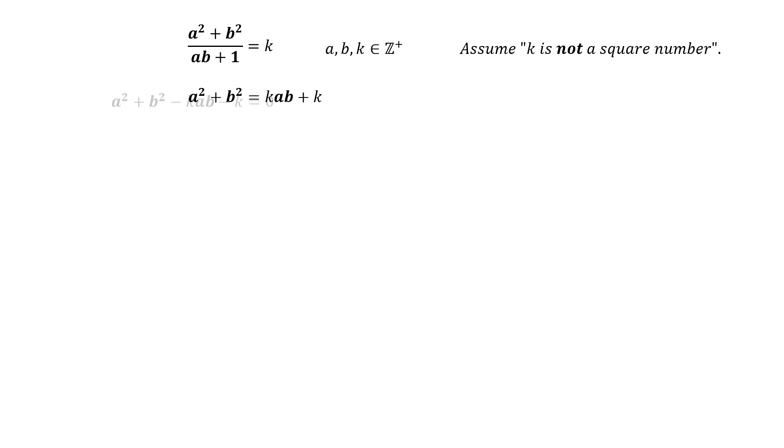The equation can be rearranged as A square plus B square minus KAB minus K equals 0. There could be infinitely many pairs of A and B that satisfy this equation. Let A and B be the smallest positive number pair that satisfy the equation for a specific value of K.